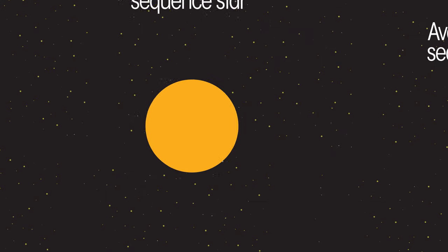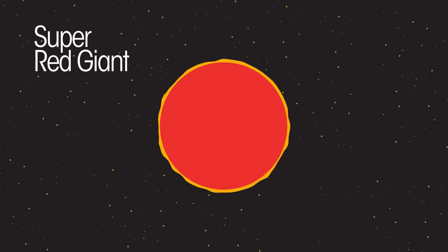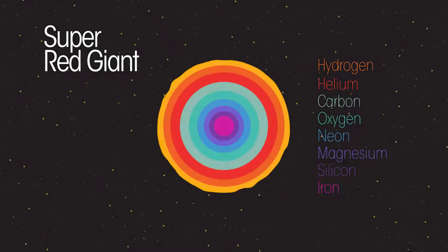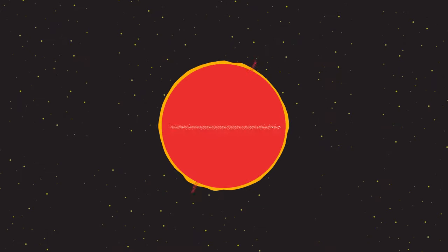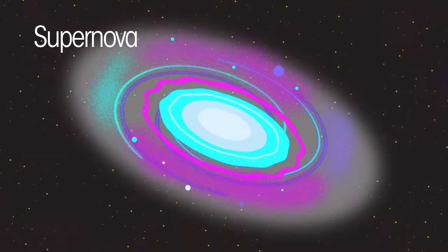These stars then expand to become super red giants, now full of all the elements up to iron. Eventually, fusion stops, resulting in the collapse of the super red giant. The shockwave created triggers an explosion, a supernova.